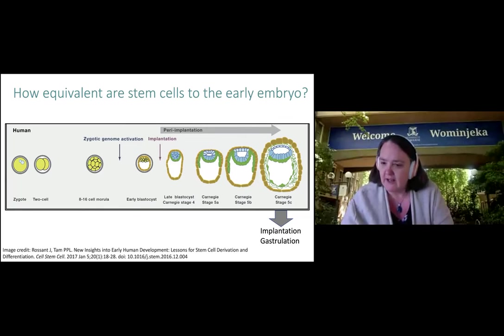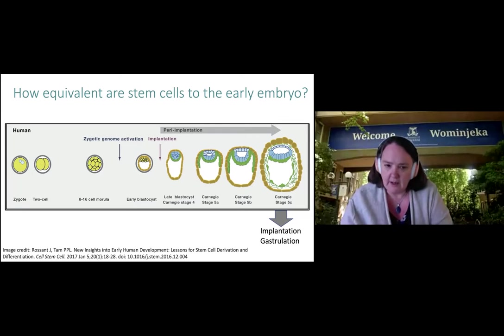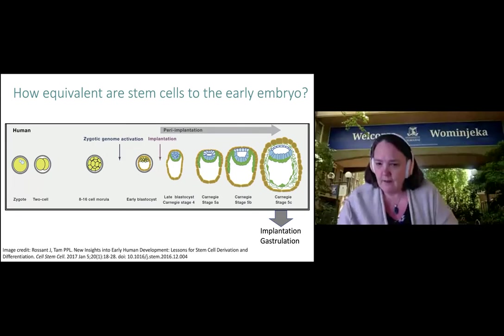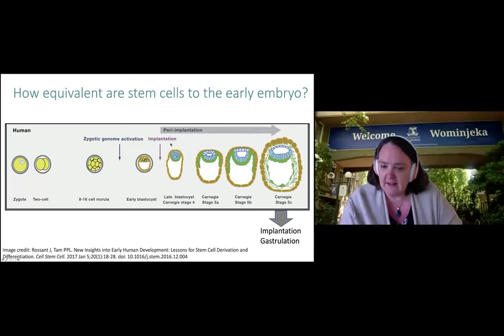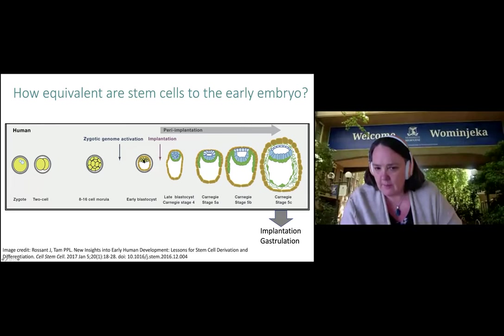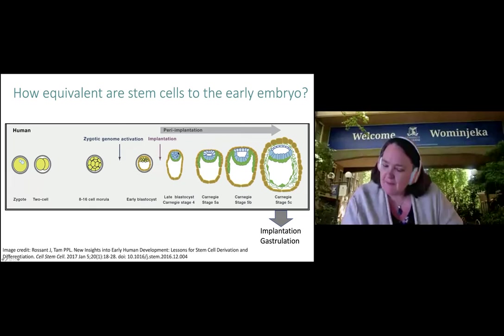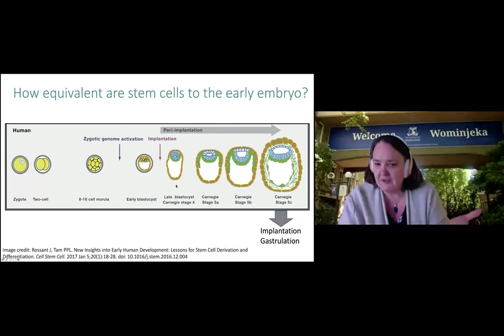We can also derive stem cells by reprogramming a mature cell back to behave like the early embryo, and it's very difficult to distinguish between an embryonic-derived stem cell and an induced pluripotent stem cell — they share very similar properties in a dish. Many people have been trying to tackle the question of how equivalent stem cells are to the early embryo. Using a lovely cartoon from Janet Rossent and Patrick Tam, we can see the key points in human development before the embryo implants into the womb. The embryonic stem cells are taken at the pre-implantation early blastocyst stage, but as they go through culture they continue to mature developmentally.